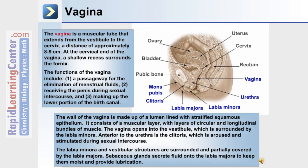The wall of the vagina is made up of a lumen lined with stratified squamous epithelium. It consists of a muscular layer with layers of circular and longitudinal bundles of muscle. The vagina opens into the vestibule, which is surrounded by the labia minora. Anterior to the urethra is the clitoris, which is aroused and stimulated during sexual intercourse. The labia minora and vestibular structures are surrounded and partially covered by the labia majora. Sebaceous glands secrete fluid onto the labia majora to keep them moist and provide lubrication.